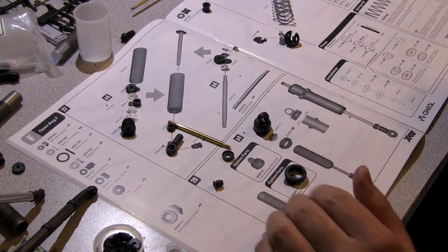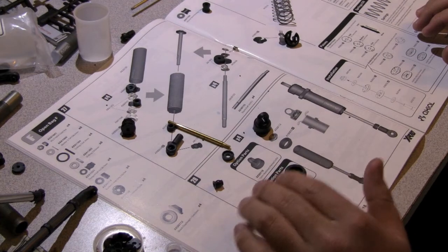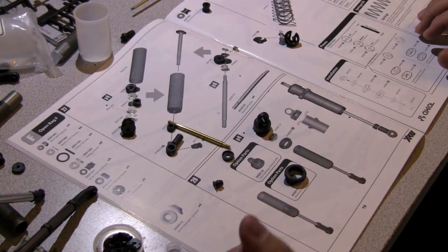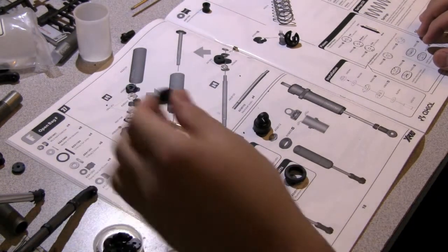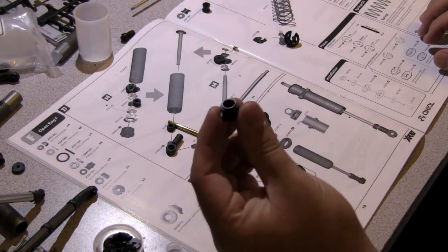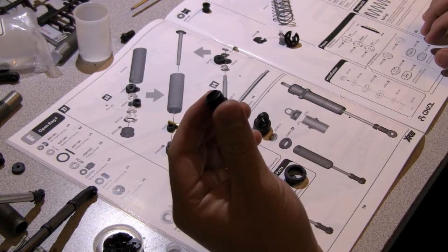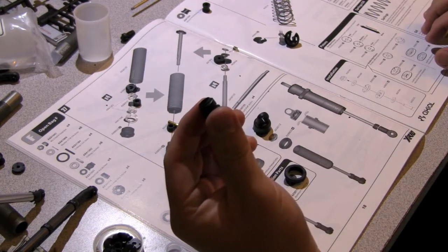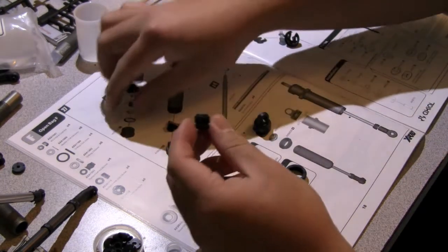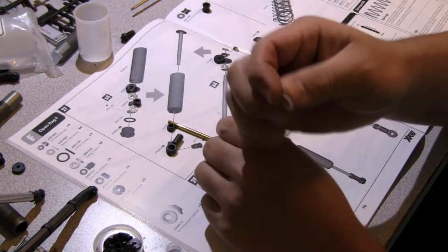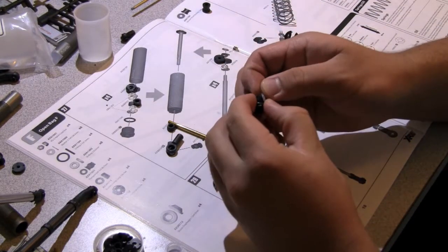So I've gone ahead and laid out all the parts I need to build the shock. You guys can just follow along. So first off, you need part AX80035, part number 1. Then you need the rubber o-ring, just slide it over. And then you have a gasket, the o-ring gasket around.